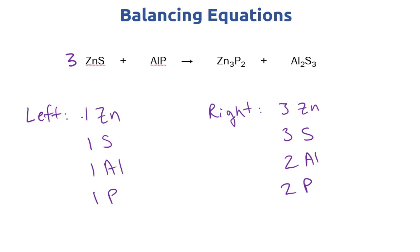So now we can update our count. Zinc and sulfur are balanced now. Aluminum and phosphorus are the only things unbalanced, and you'll notice that aluminum and phosphorus both have twos and are in the same molecule. So if we put a two before AlP, we now have two aluminum and two phosphorus on both sides. That is a fully balanced equation for the reaction of ZnS with AlP.